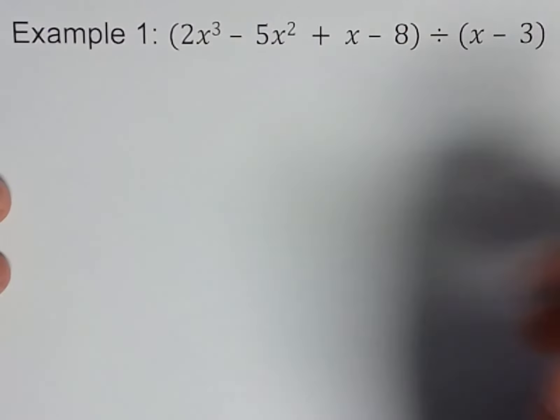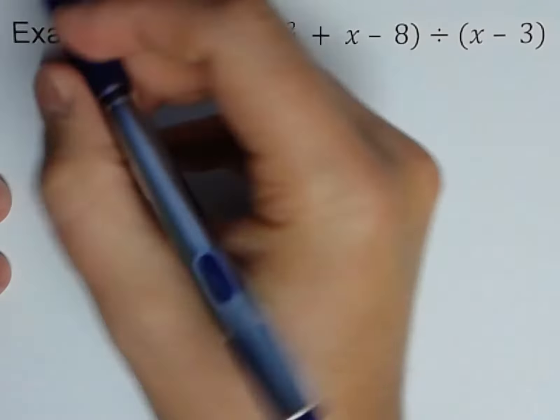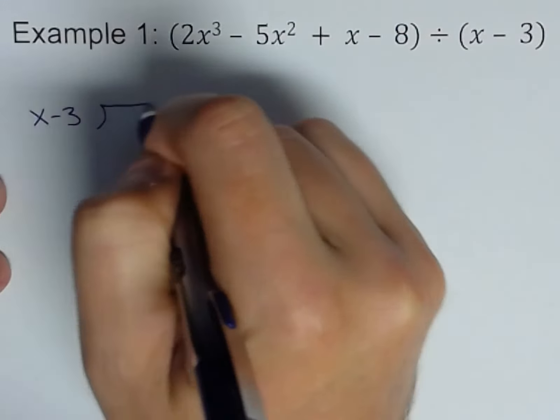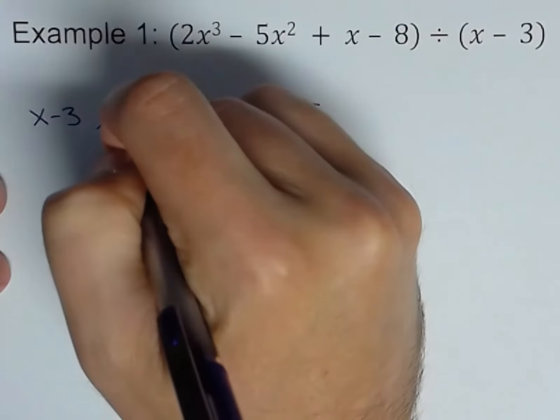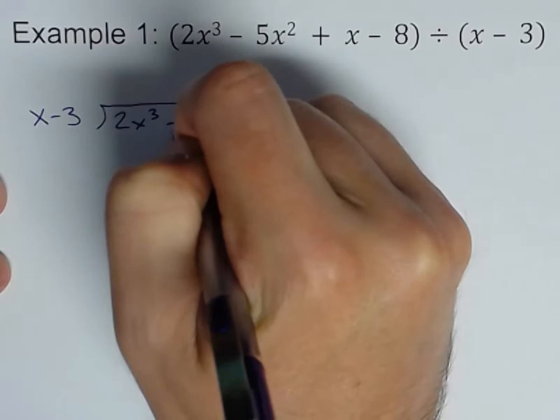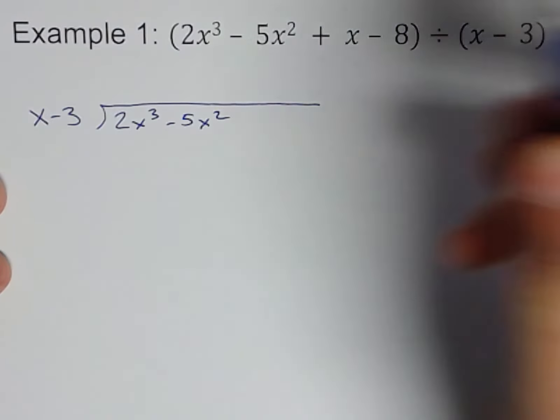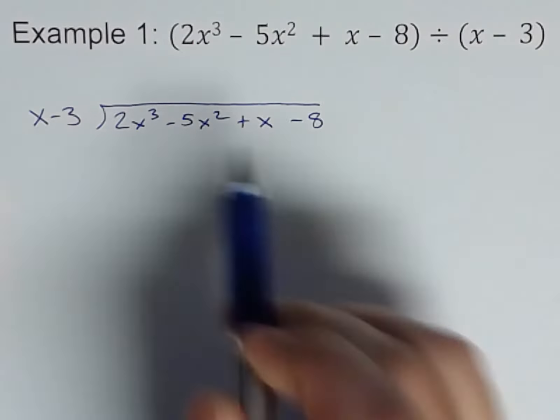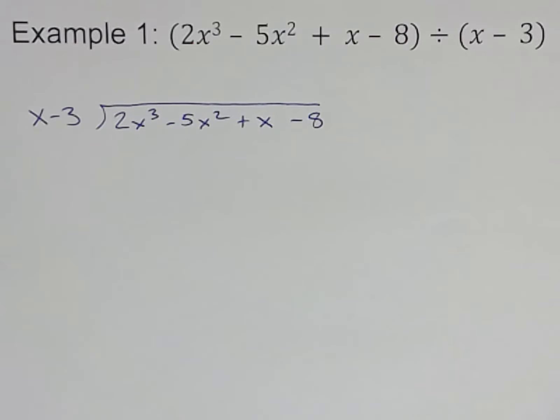So let's go ahead and set it up: x minus 3 divided into 2x³ - 5x² + x - 8. Notice, very similar to what we reviewed a couple slides ago with straight-up long division, just with numbers.